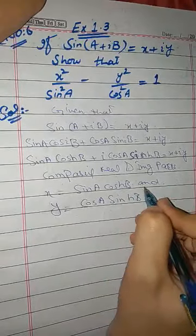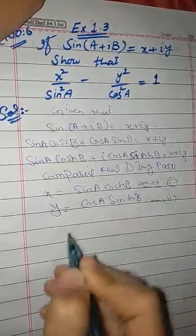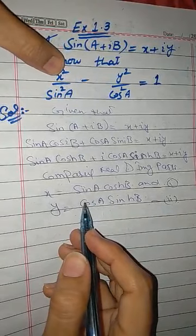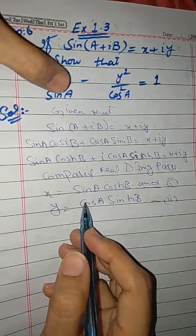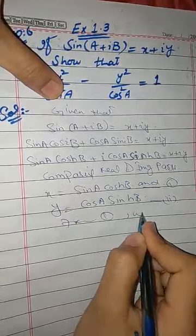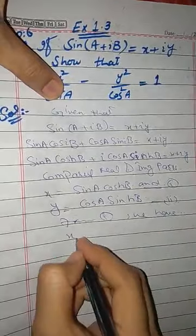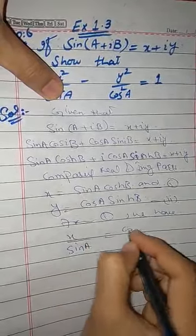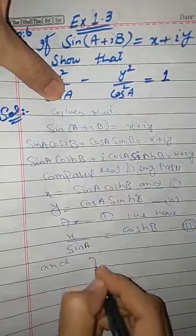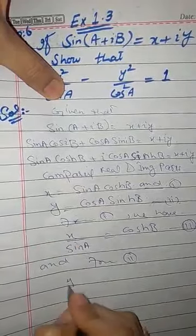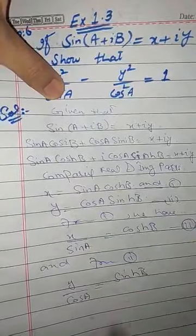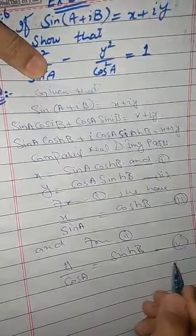Now we have two equations. We need to use equation 1 and equation 2 to prove the result. From equation 1, x over sin(a) is equal to cosh(b) — call this equation 3. From equation 2, y over cos(a) is equal to sinh(b) — call this equation 4.